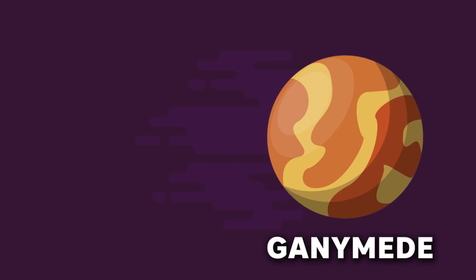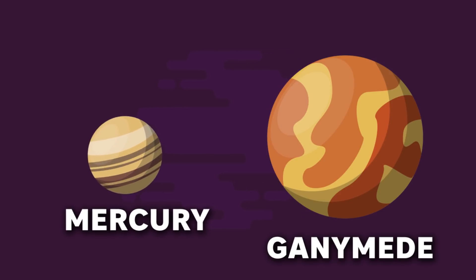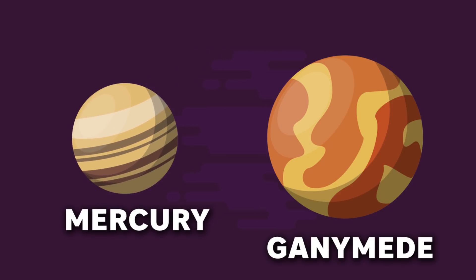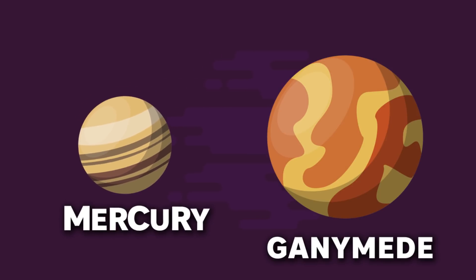Ganymede is the biggest moon in the solar system. In fact, it's even bigger than the planet Mercury. There is a high chance that Ganymede and other 37 Jovian moons might collide with Earth if Jupiter suddenly disappears.